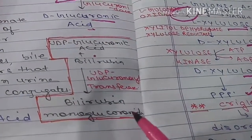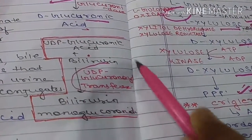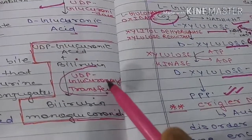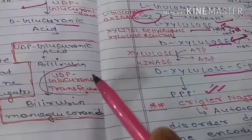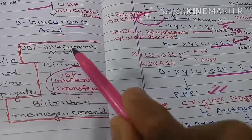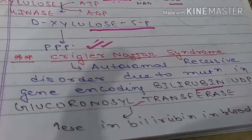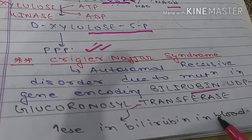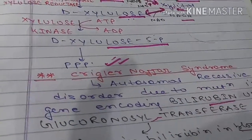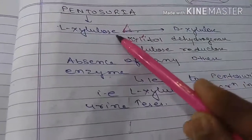The conjugation of bilirubin involves UDP-glucuronosyltransferase. If this enzyme is absent or deficient, bilirubin conjugation is impaired — this is called Crigler-Najjar syndrome, an excess bilirubin accumulation disorder.